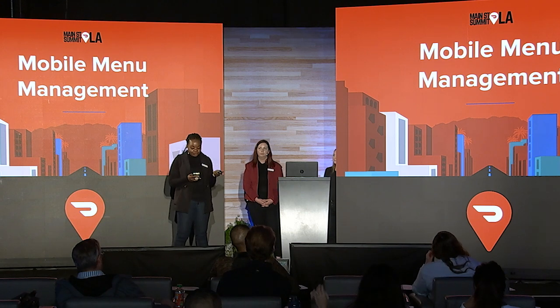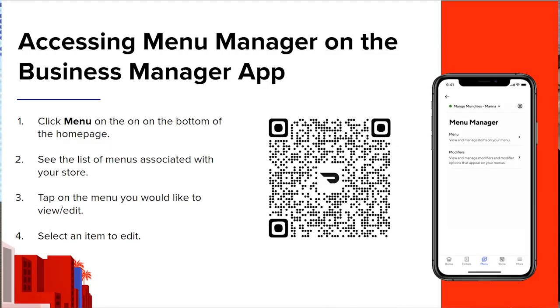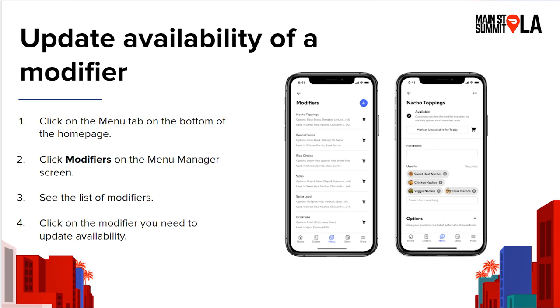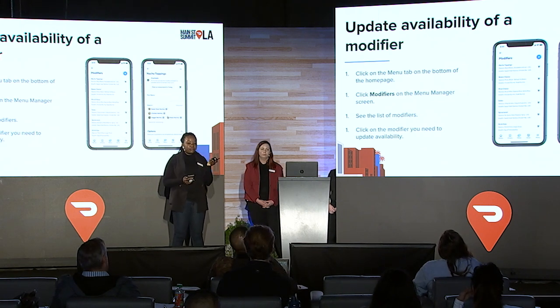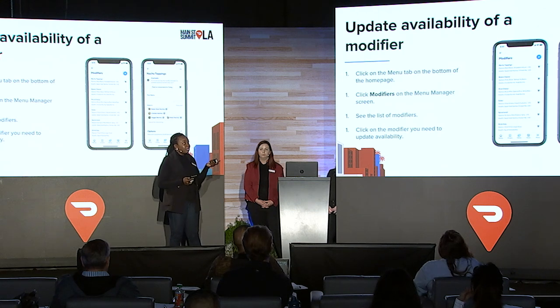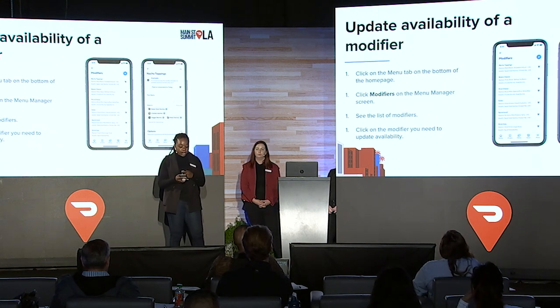Did you know that you can also access menu manager on the DoorDash Business Manager app? How you can access it: click download the app. If you don't have the app already, you can scan the QR code on your screen. Once you download the app, on the home page you'll see the option for menu right there in the middle. Click on menu and you'll see all the menus associated with your store. Once you do that, tap on the menu you'd like to update, then click on a menu item you'd like to edit. You can also update availability of modifiers on menu manager from the mobile app — the same way you can manage menu items, you can also manage your modifiers from there.